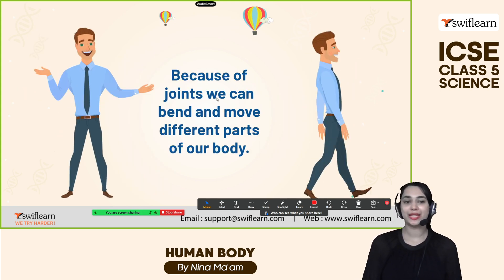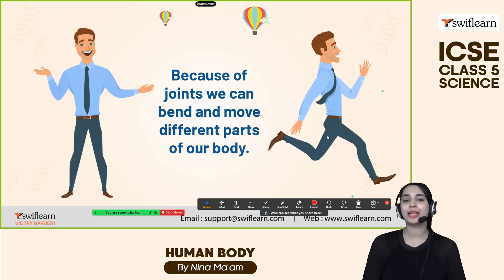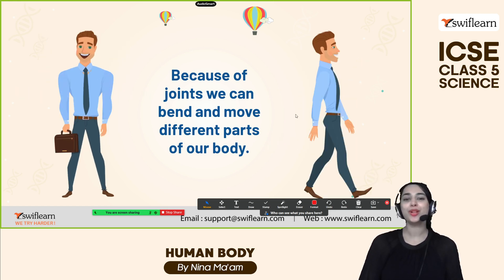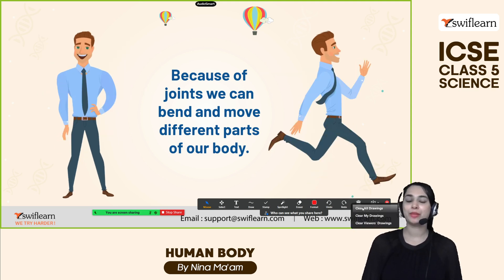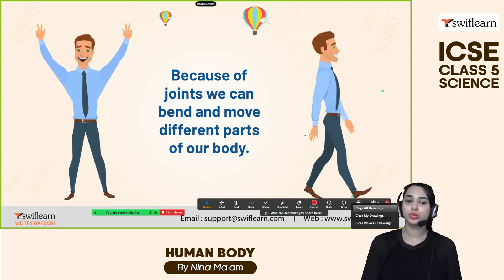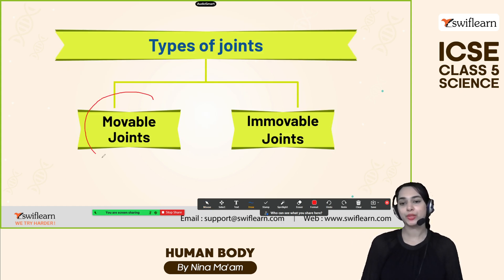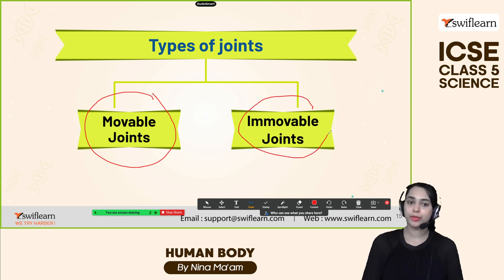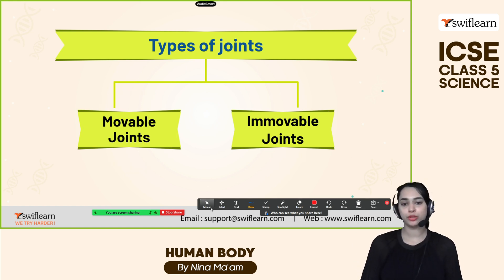Look at this — he is walking, jumping, moving his hands and everything. It's all possible because of the joints. We can bend our body parts and move them. The types of joints can be divided into two categories: movable joints and immovable joints.